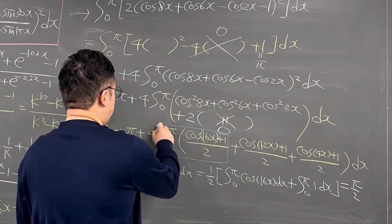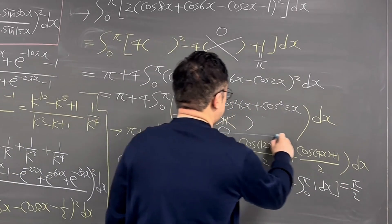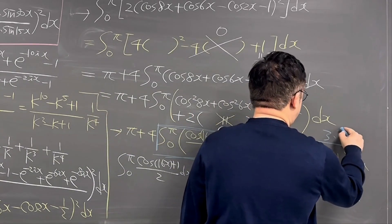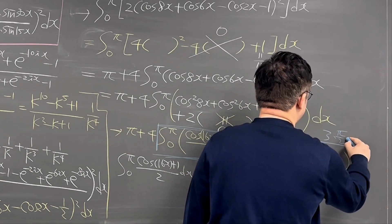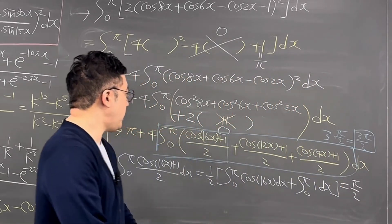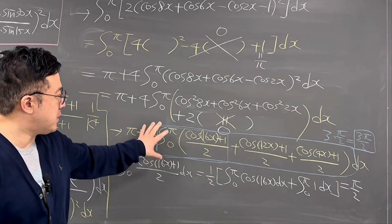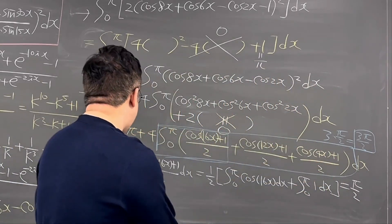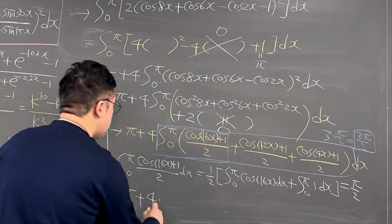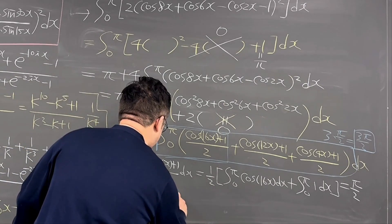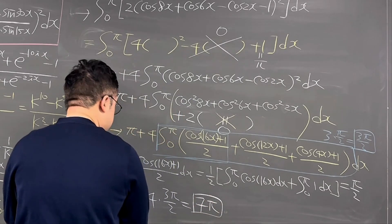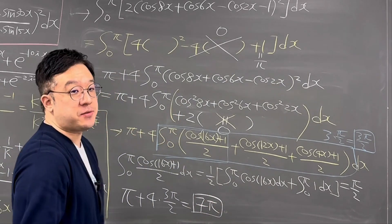So the whole integral is pi + 4 × (3π/2) = pi + 6pi = 7pi. The answer for this question is 7π.